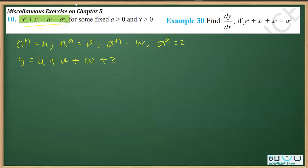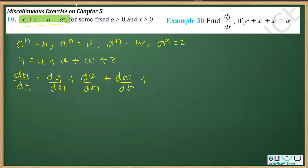Now if I differentiate both sides with respect to x, then dy/dx should be equal to du/dx plus dv/dx plus dw/dx plus dz/dx. So clearly, in order to find dy/dx, we have to find each of these derivatives.